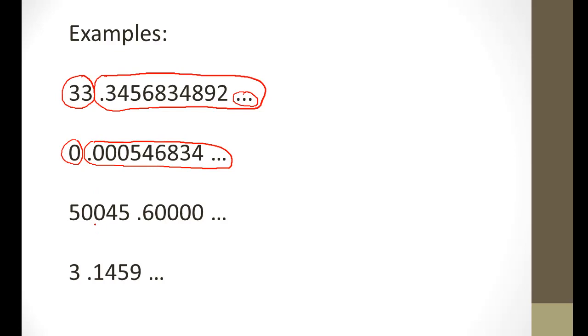In this example, 50,045 would be the whole part, and 0.6 with a string of zeros would be the decimal part of the number.